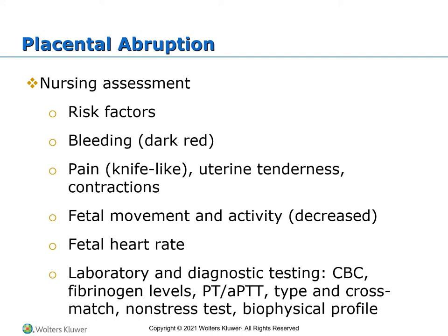Complications include Couvelaire uterus — blood invades the myometrial tissue between the muscle fibers; the uterus turns blue or purple, loses contractility, and may require a hysterectomy. Also renal failure and pituitary necrosis can result from ischemia. Maternal hypertension is the most common cause. Also cocaine use, blunt external abdominal trauma such as in maternal battering or a motor vehicle accident, smoking, history of previous abruption, preterm rupture of membranes, multiple gestation, and sudden changes in intrauterine pressure such as amniotomy.